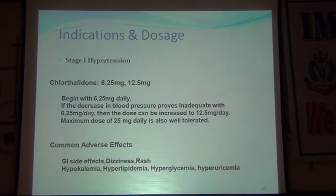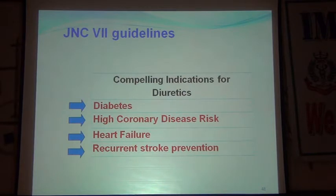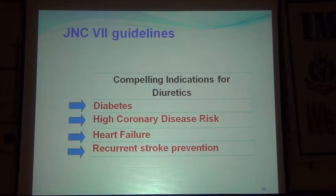In clinical practice for Stage 1 hypertension, chlorthalidone can be chosen as monotherapy. Start with 6.25 mg once daily and gradually increase to 25 mg per day. The main side effects to watch are rash and dizziness, and we must keep in mind hypokalemia, dyslipidemia, and hyperglycemia.